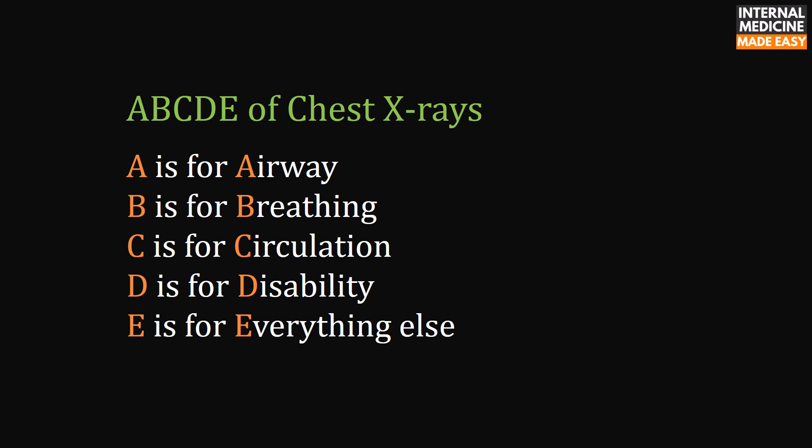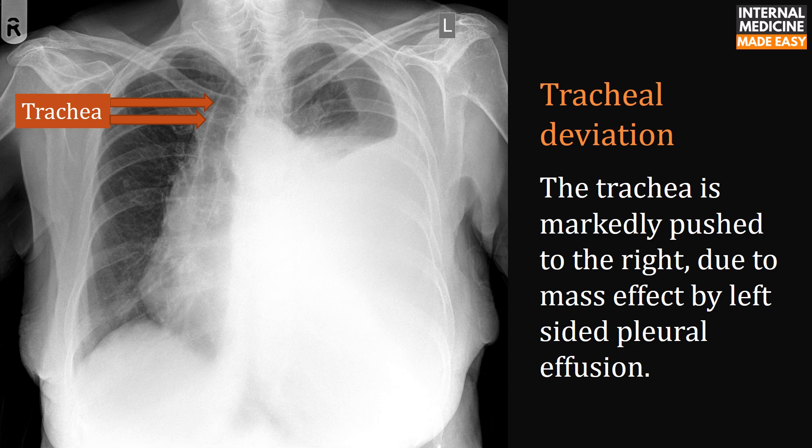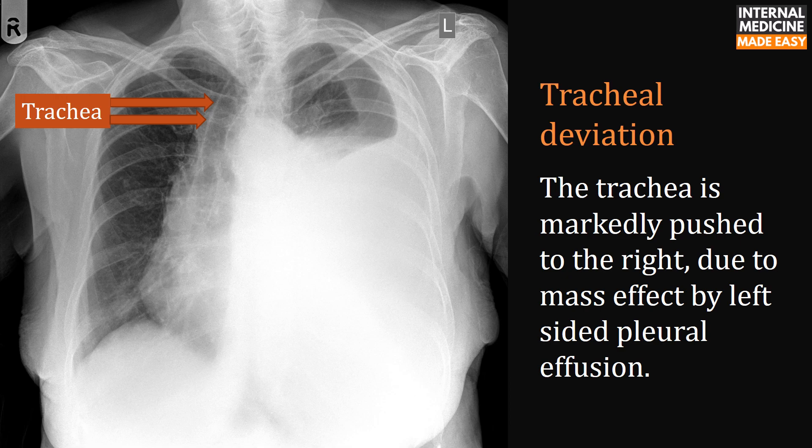The ABCDE of chest x-rays: A is for Airway, B is for Breathing, C is for Circulation, D is for Disability, and E is for Everything else. For Airway, look at the trachea, right and left main stem bronchi, and intermediate bronchus. What to look for: tracheal deviation and carinal angle. In one x-ray, the trachea is markedly pushed to the right due to mass effect from left-sided pleural effusion. The subcarinal angle (shown by a yellow solid line) is also enlarged, much more than the upper limit of normal of 90 degrees.